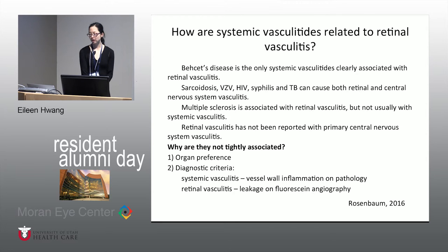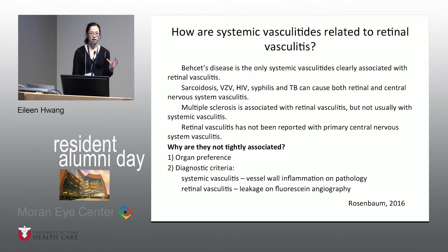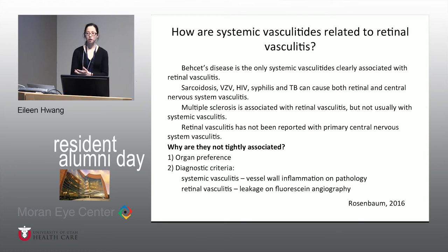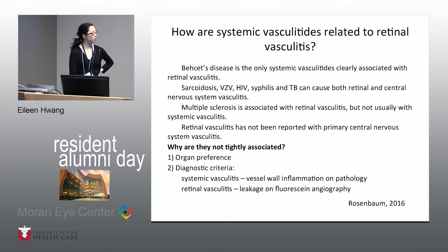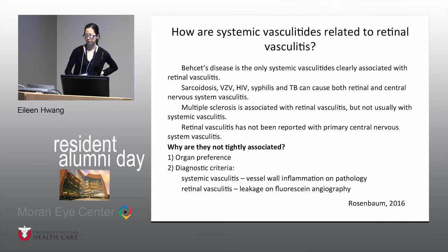Systemic vasculitis is very rarely associated with retinal vasculitis. The way we diagnose retinal vasculitis — by leakage on fluorescein angiography, which can sometimes be due to occlusion rather than an inflammatory process — is different from how systemic vasculitides are diagnosed, which is by biopsy demonstrating vessel wall inflammation and necrosis. Going back to primary CNS vasculitis, retinal vasculitis has not been reported in that context.